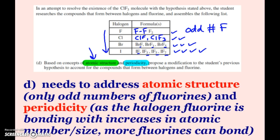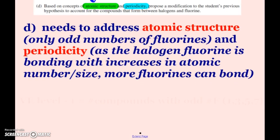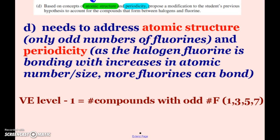Whatever you decide, you need to include atomic structure, which is look at the number of fluorines, and then periodicity. We see that there's a trend as we are going down in family, increasing in atomic number or size. One thing you might consider is that the valence electron level, or the period that the halogen is on, when you subtract one, that tells you how many compounds it has. And those compounds have an odd number of fluorines, starting with one, three, five, seven.